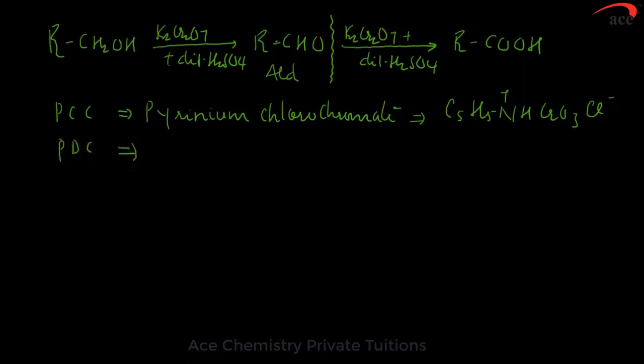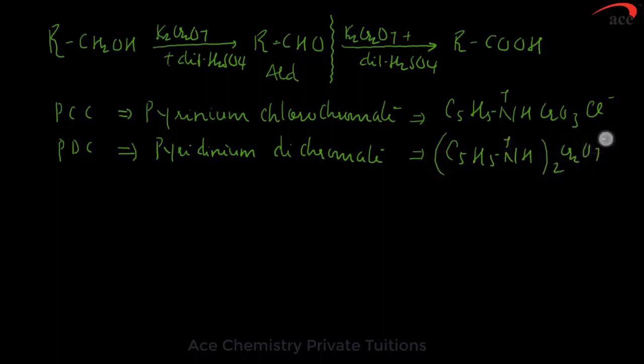What is PDC? PDC is pyridinium dichromate. Formula is C5H5N plus H, the whole twice, CR2O7 minus 2.